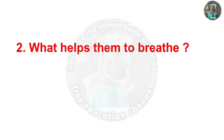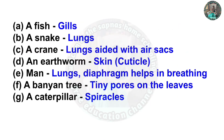Question 2. What helps them to breathe? A fish — gills. A snake — lungs. A crane — lungs, aided with air sacs. An earthworm — skin and cuticles. Man — lungs and diaphragm, which help in breathing. A banyan tree — tiny pores on the leaves. A caterpillar — spiracles.